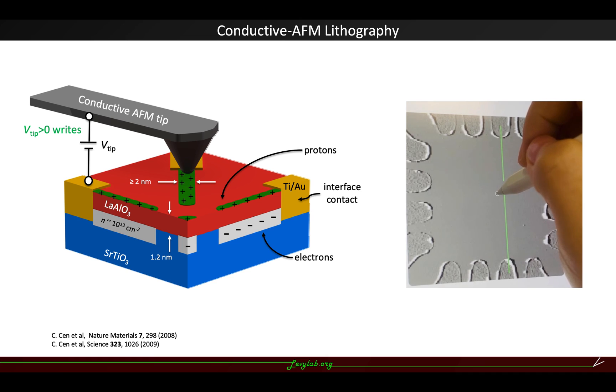This writing process has a very high resolution, the width can be as small as 2 nanometers, and it's also reversible, which means we can erase the path by simply applying a negative voltage to the tip.